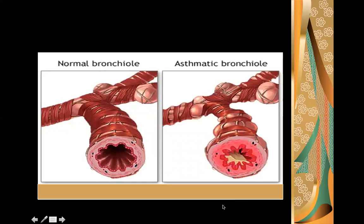In this image you can appreciate the normal bronchiole versus the asthmatic bronchiole. Comparing the lumen, the size is normal in the healthy bronchiole and reduced in the asthmatic one. You can also make out the inflammation of the mucous membrane, mucous secretion, and how the bronchial muscles have constricted the bronchus.